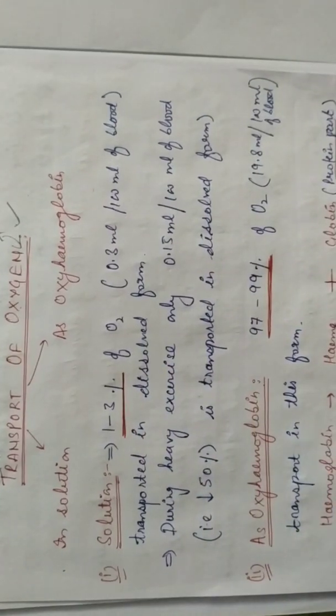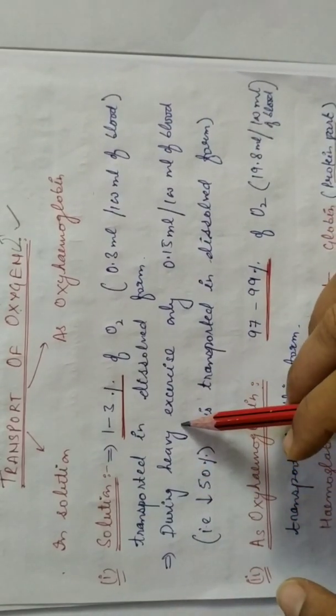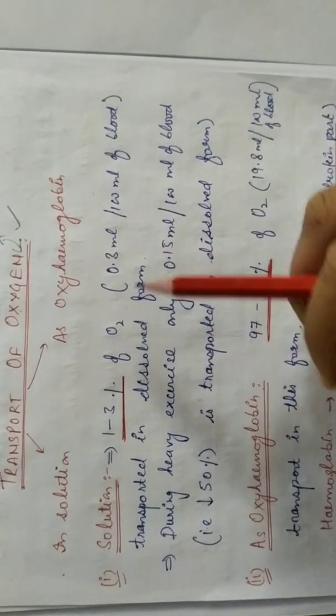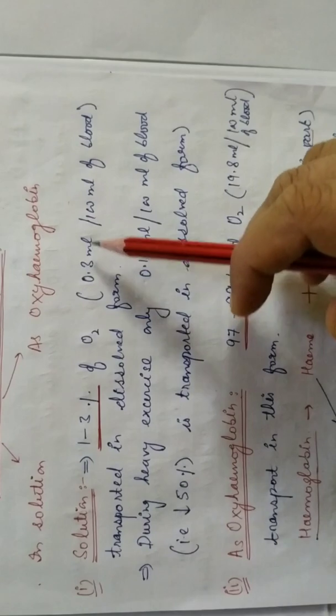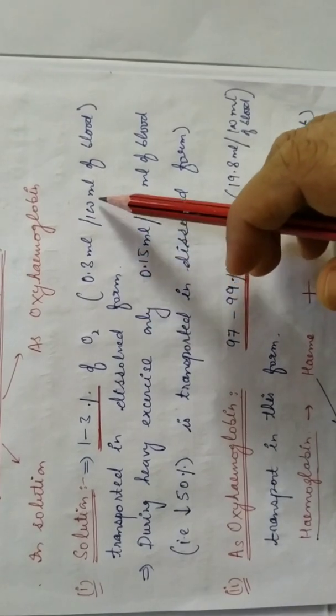आप जानते हैं हमारा blood एक liquid है और उसमें plasma present होता है, तो plasma में dissolved form में oxygen transport होती है। लेकिन जब आप heavy exercise करते हैं तो plasma में oxygen transport की value काफी कम हो जाती है — 0.3 ml per 100 ml से घटकर 0.15 ml per 100 ml हो जाती है। यानि during heavy exercise, oxygen transport in solution form is reduced to 50%. ज़्यादा transport oxyhemoglobin के form में ही होगा।